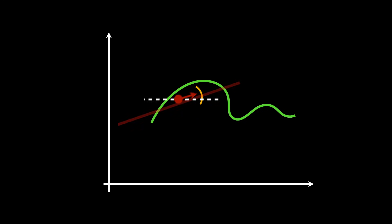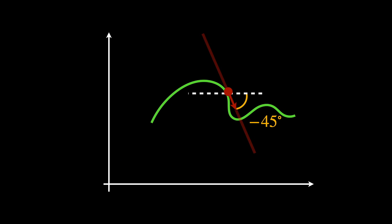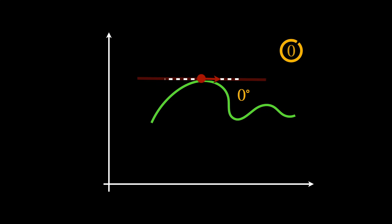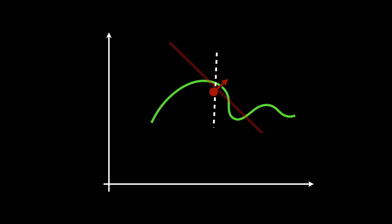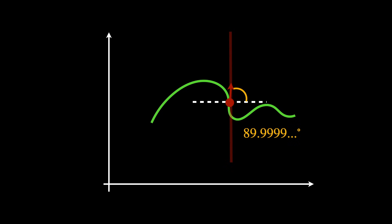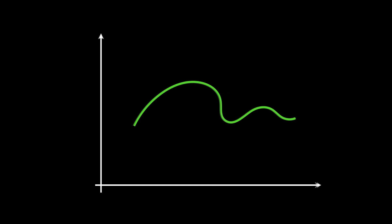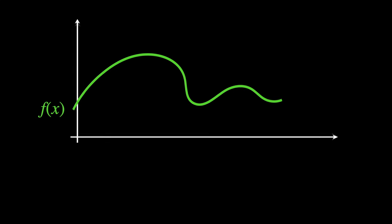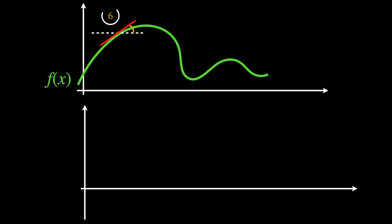Following the same logic, a tangent line that forms an angle of 45 degrees but downwards has inclination minus 1. For a 0 degree angle, the inclination is 0. And for 90 degrees, the inclination is a very large number. We need a way of tracking the inclination of all these tangent lines at each point. We can do this for all points, and that's the concept of derivative.